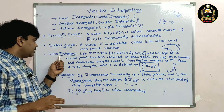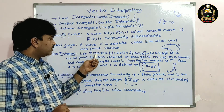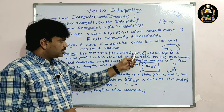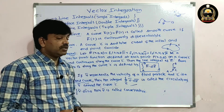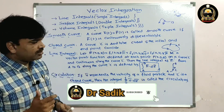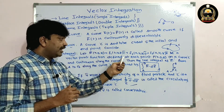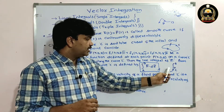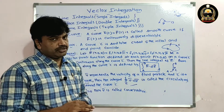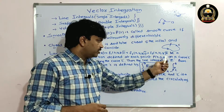Now, the very important definition — line integral. Let f̄(x, y, z) = F1·ī + F2·j̄ + F3·k̄ be a vector point function. f̄ is a vector point function defined at each point P on curve C, from point A to point B.